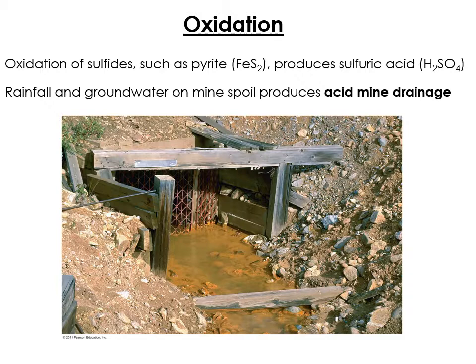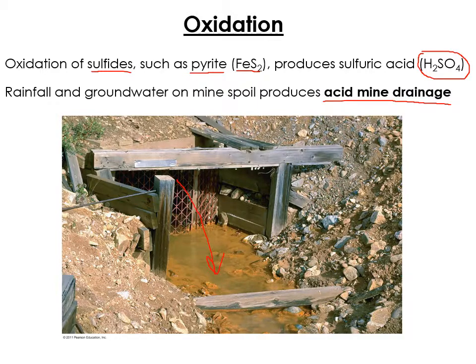Another major form of chemical weathering is oxidation — exposing certain minerals to oxygen changes their chemical composition. This is a big problem in Colorado with acid mine drainage. In mine shafts, sulfide rocks like pyrite (iron sulfide, FeS2) are exposed to oxygen, water, and air. Sulfides are often associated with gold, silver, and lead deposits. When pyrite oxidizes, it creates sulfuric acid, which drains out of the mines into streams, adding acid to the water and creating serious problems for aquatic life.